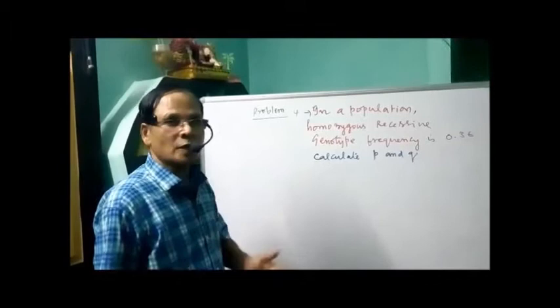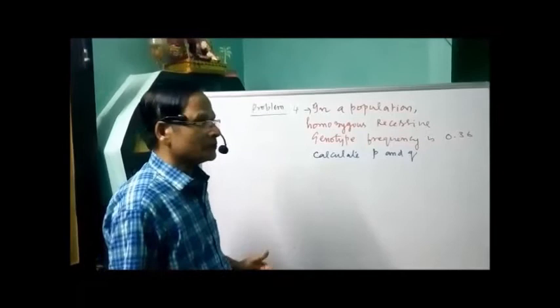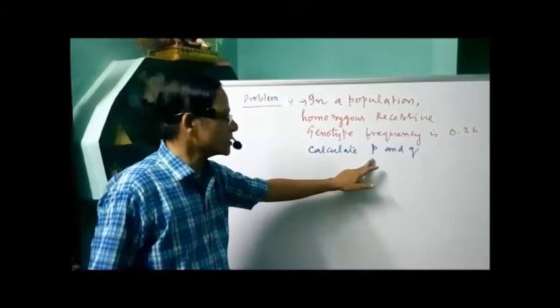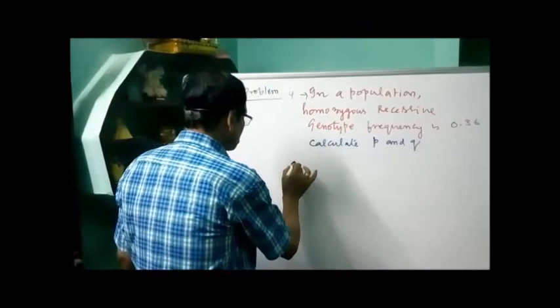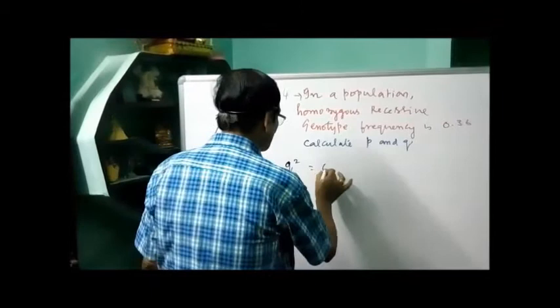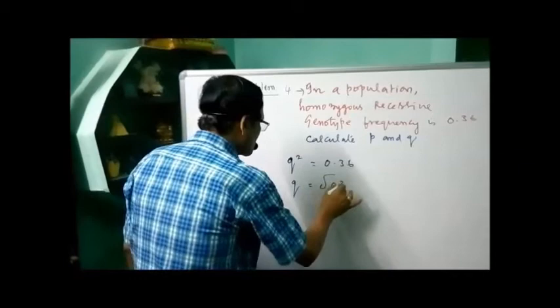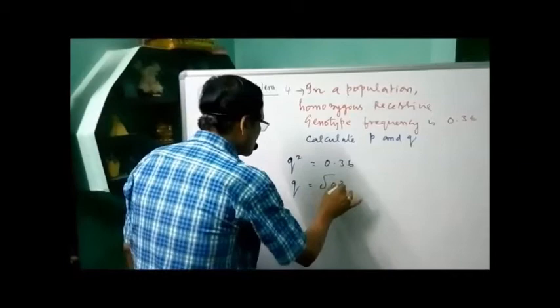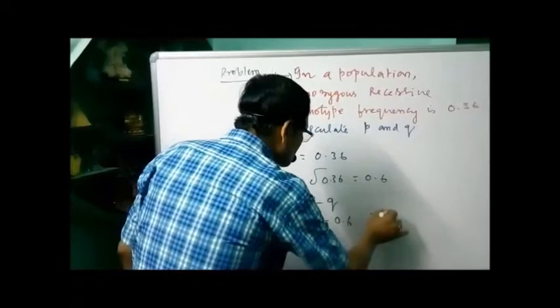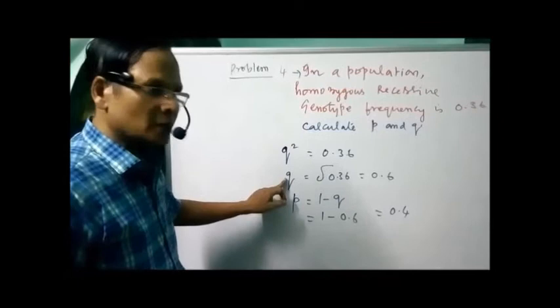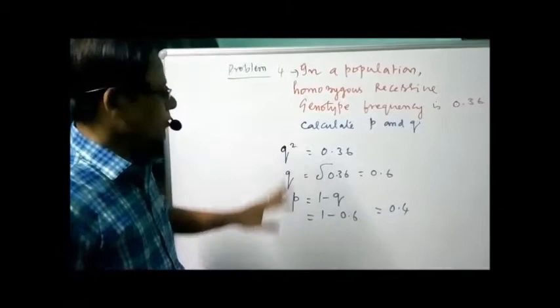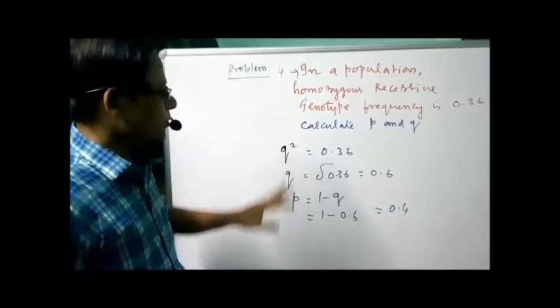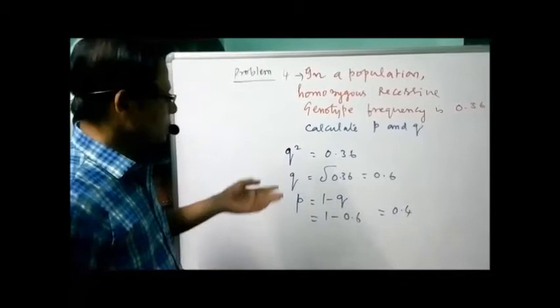Another direct problem: in a population, the homozygous recessive genotype frequency is 0.36. Calculate the dominant and recessive allele frequencies. From Q² equals 0.36, Q equals the square root of 0.36 equals 0.6. Then P equals 1 minus Q equals 1 minus 0.6 equals 0.4. So recessive allele frequency Q is 0.6 and dominant allele frequency P is 0.4. This type of direct problem frequently appears in question papers.